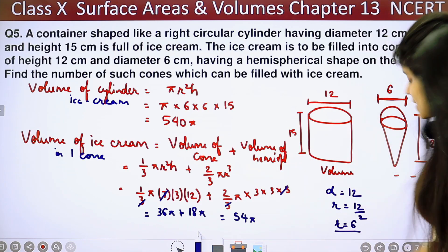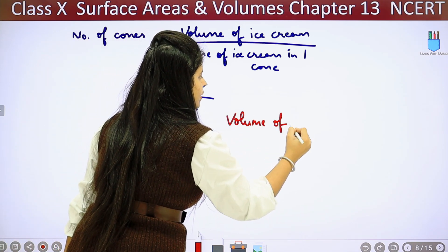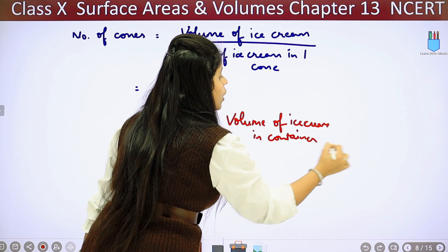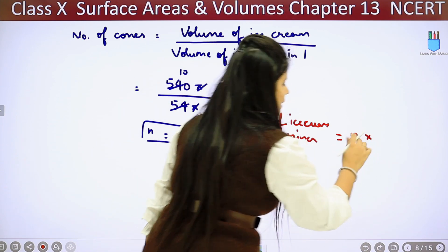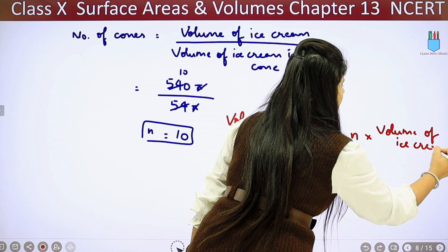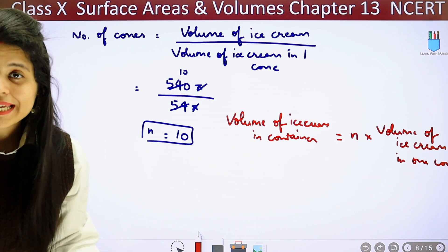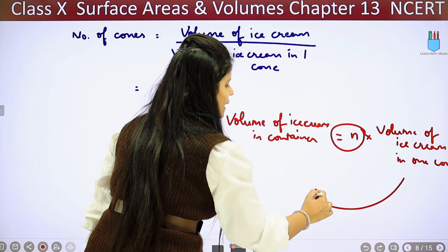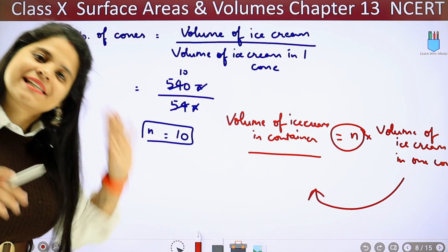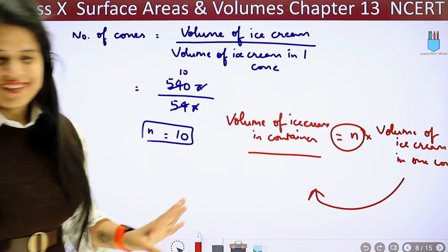Some people can do this directly. Here I will tell you, if you do this: volume of ice cream in container will be equal to n × volume of ice cream in one cone. You can also do this, you will solve this. This is nothing but if we rearrange, we will take this and divide. So somewhere if you can see that this is done directly, it will not be difficult. It will be the same thing. You will do this, then the answer will be fine. So it's just up to you, what makes it easier.